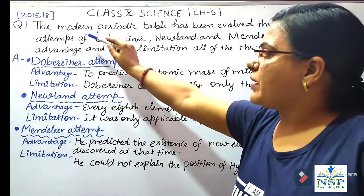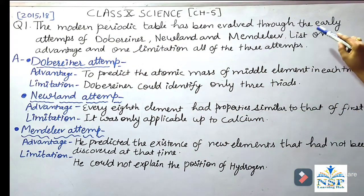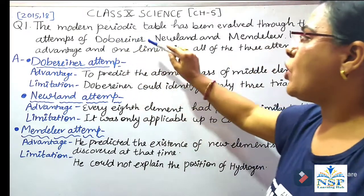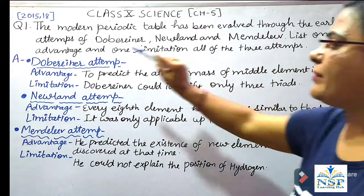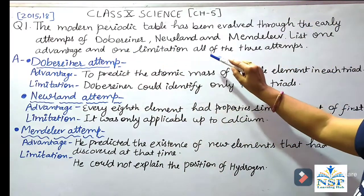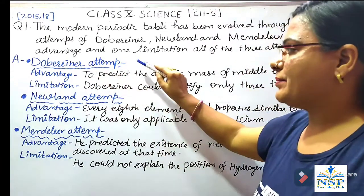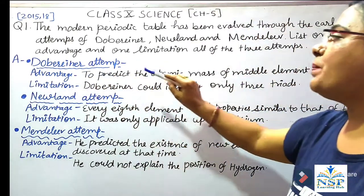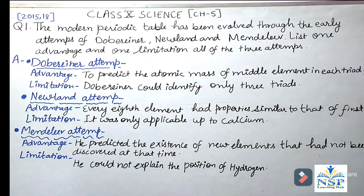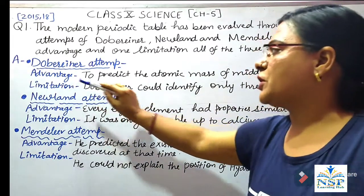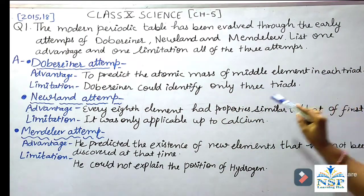Question No. 1: The modern periodic table has been evolved through the early attempts of Döbereiner, Newland and Mendeleev. List one advantage and one limitation of all three attempts. Döbereiner's attempt — Advantage: to predict the atomic mass of the middle element in each triad. Limitation: Döbereiner could identify only three triads.